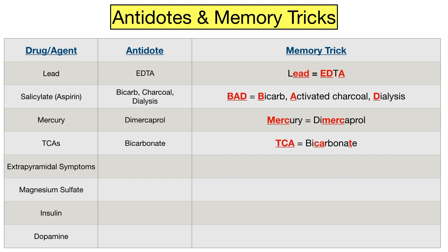Next we have extrapyramidal symptoms, which are not a drug or agent but are symptoms that can result from taking antipsychotic medications. These symptoms may include involuntary muscle contractions, tremors, stiff muscles, and involuntary facial movements. The treatment is diphenhydramine. When you think of extrapyramidal symptoms, think of pyramid — and the letters in the word 'pyramid' appear in the word 'diphenhydramine.' Of note, anticholinergics such as diphenhydramine may cause worsening tardive dyskinesia and may work better for extrapyramidal symptoms such as dystonia, akathisia, and Parkinson-like symptoms.